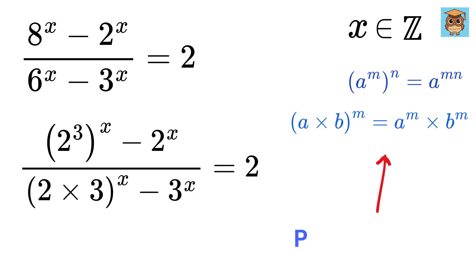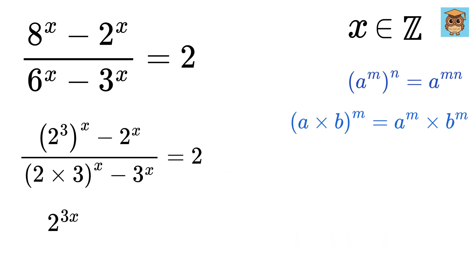Next, we will use this power rule to proceed further. So 2 raised to 3x minus 2 raised to x divided by this will be 2 raised to x times 3 raised to x minus 3 raised to the power of x equals 2.